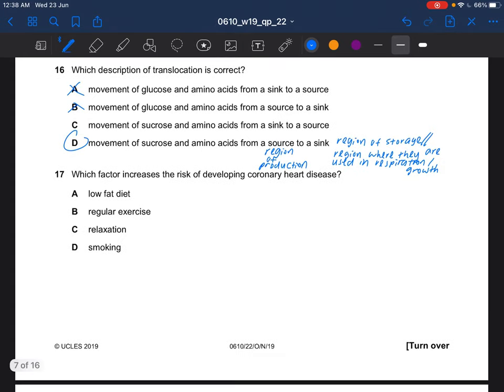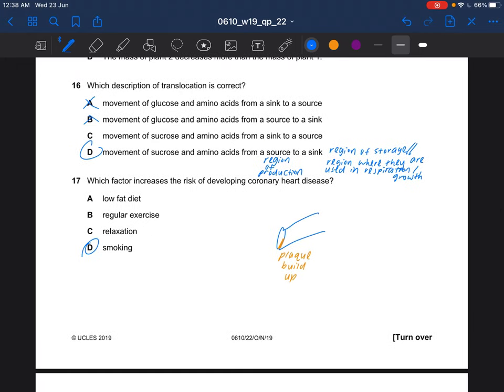Question 17, which factor increases the risk of developing coronary heart disease? It would be smoking. Smoking actually causes the plaque to build up in the coronary artery and hence causing coronary heart disease. Your heart would need to pump harder in order to transport the blood.